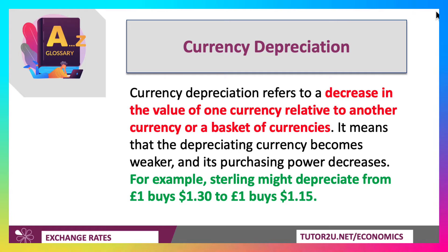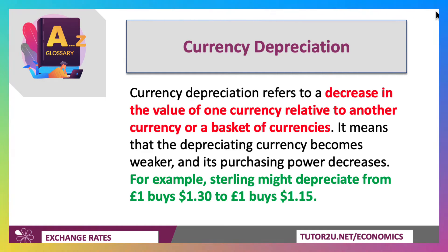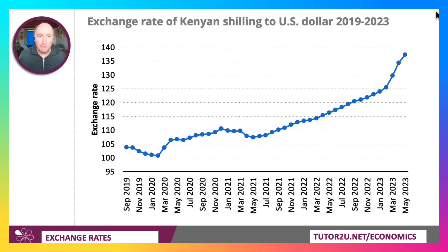Its purchasing power against other currencies declines. A good example might be sterling — it might depreciate from one pound buying $1.30 to one pound buying $1.15. That would be a fall. Of course, the depreciation happens inside a floating exchange rate system.